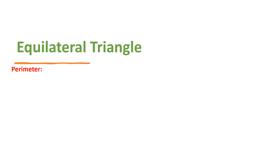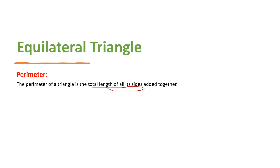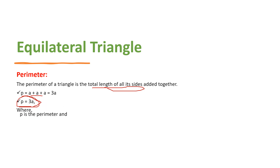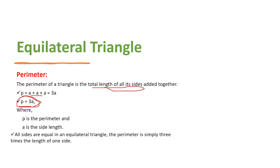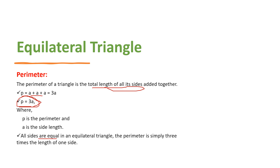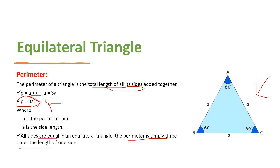Now let's look at the perimeter of an equilateral triangle. The perimeter is the sum of the total length of all sides. If a, b, c are the side lengths, then perimeter equals a plus b plus c. For an equilateral triangle, all sides are equal to a, so a plus a plus a equals 3a. Therefore, the perimeter P equals 3a — simply three times the side length.